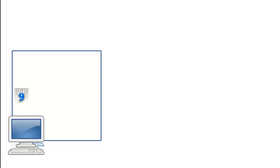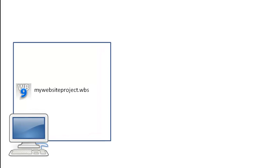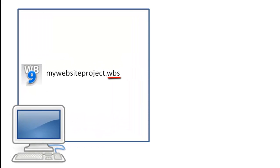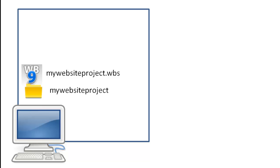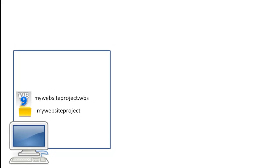First, let's imagine that this is your computer, and on your computer you are of course developing your website. In 90 Second Website Builder, your project is called a WBS file and your entire website is stored inside that one project file — whatever you called it, dot WBS. Behind the scenes, the software has also created what's called an assets folder, named whatever you named your project. You never really need to go into this folder, but the software stores images you're dragging and dropping into your pages there.